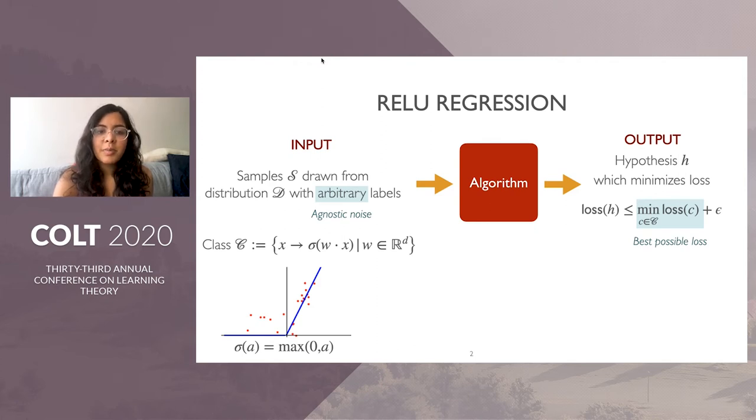The concept class C is parameterized by weight vectors in R^D and is a nonlinear function class. The interest for ReLUs comes from the fact that ReLUs are the most commonly used activation functions in neural networks. We focus on the squared loss, and would attack this using empirical risk minimization.